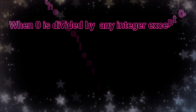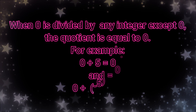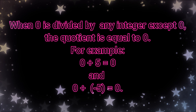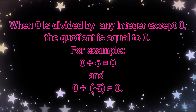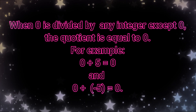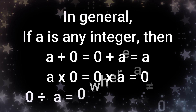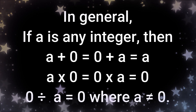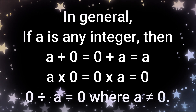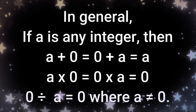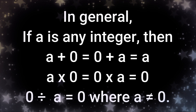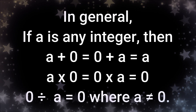When 0 is divided by any integer except 0, the quotient is equal to 0. For example, 0 divided by 5 is equal to 0, and 0 divided by negative 5 is also equal to 0. In general, if a is any integer, then a plus 0, or 0 plus a is equal to a. And a times 0 is equal to 0 times a, which is equal to 0. And lastly, 0 divided by a is equal to 0, where a is not equal to 0.